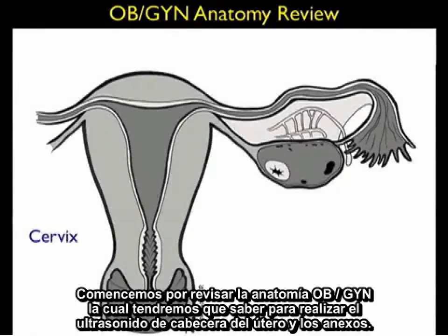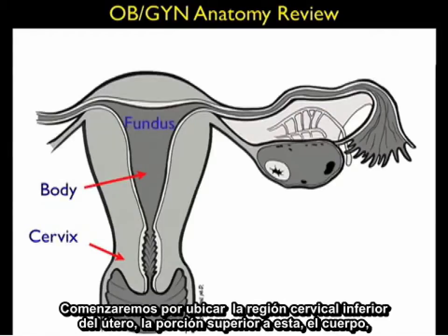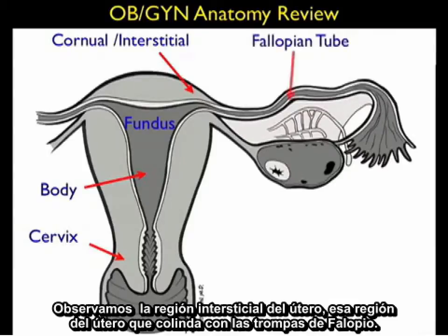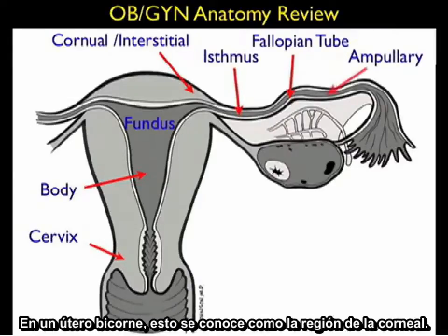Let's begin by reviewing the OB/GYN anatomy that we'll need to know to perform bedside ultrasound of the uterus and the adnexa. We'll begin by locating the lower cervical region of the uterus, the portion above that the body, and the fundal region of the uterus above the body, which is where we define an intrauterine pregnancy to be located. Notice the interstitial region of the uterus — that region that abuts the fallopian tube. In a bicornuate uterus, this is known as the cornual region.